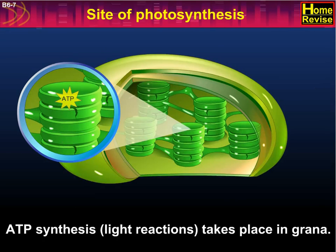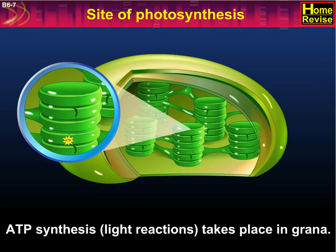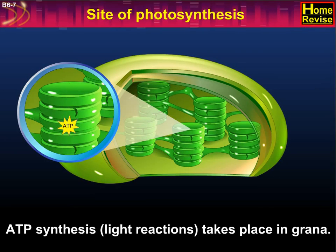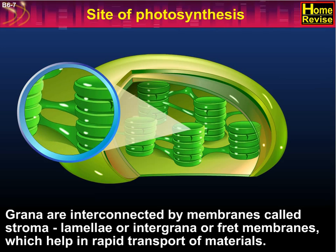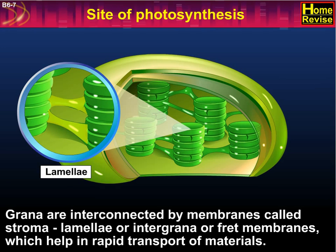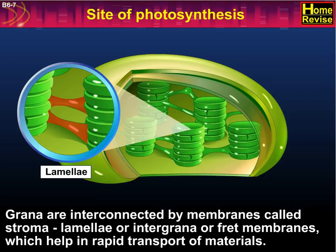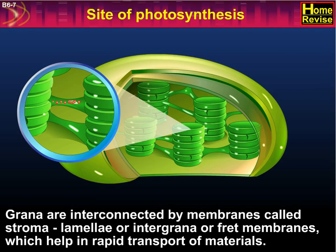ATP synthesis, i.e. light reactions, take place in the grana. Grana are interconnected by membranes called stroma lamellae, or intergrana or FRET membranes, which help in rapid transport of materials.